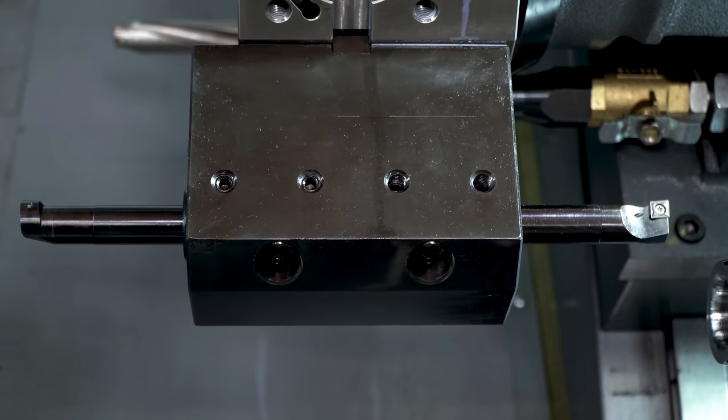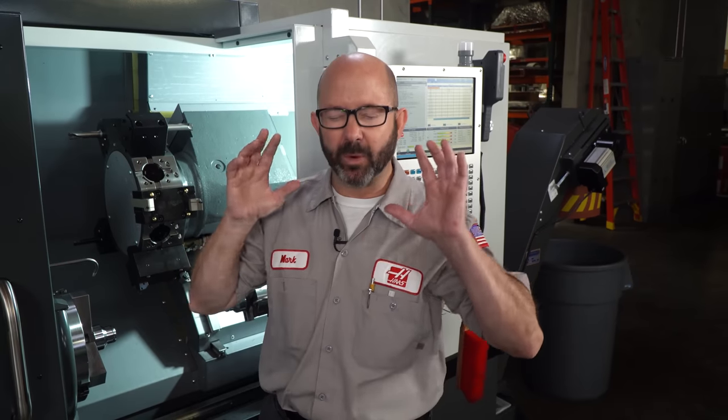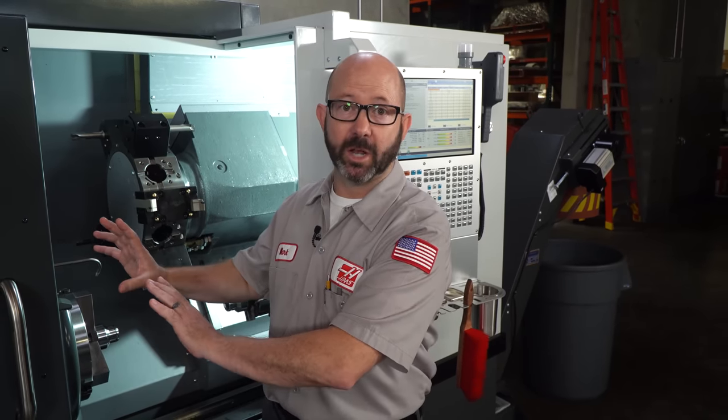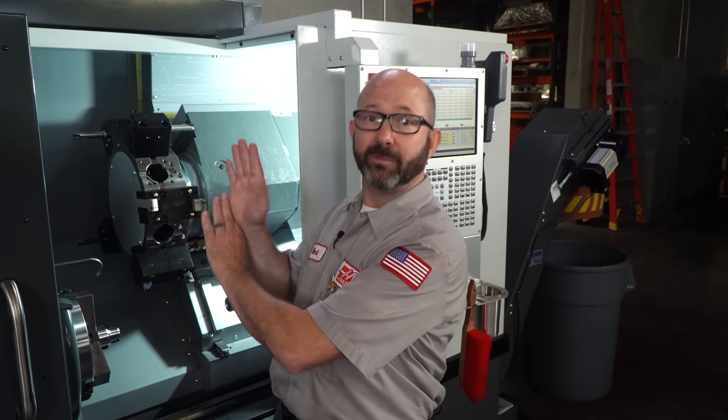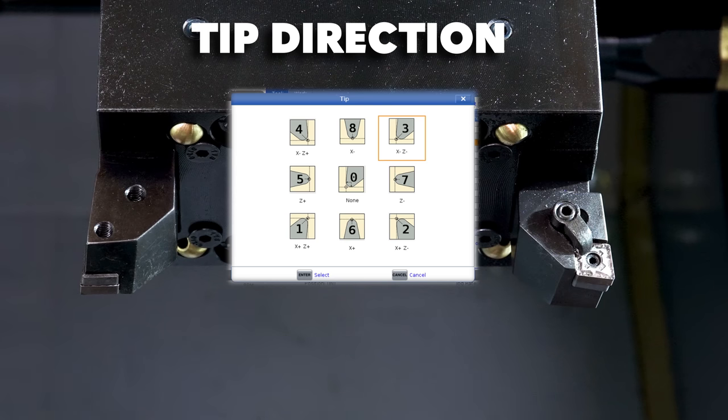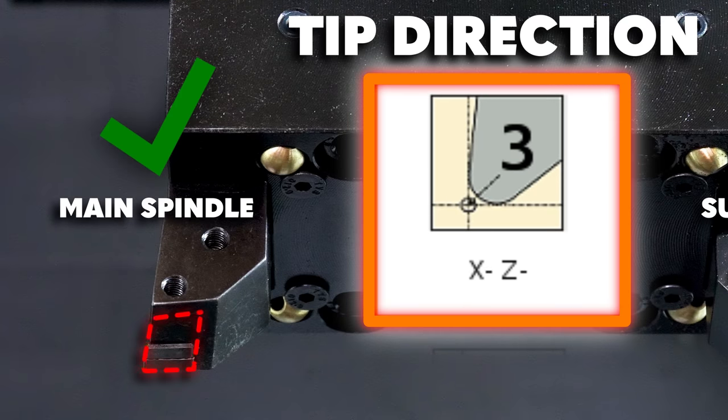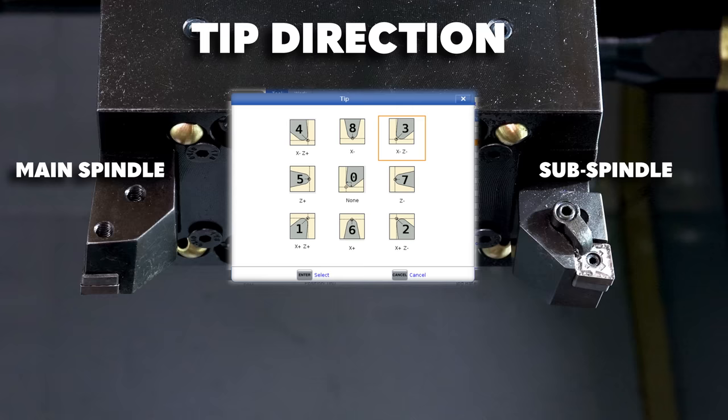G14 mirrors everything for us. So when it comes to our tool tip directions, if we're using tool nose radius compensations, we have to remember that we're programming everything for the main spindle. And that includes our tip directions. We have to use a tip direction that matches our tool as if it were facing the main spindle, not the sub. Here's what I mean. If, for example, we used a tip direction of three on our main spindle, we would still use a tip direction of three for our outside turning tool when running on our sub-spindle.